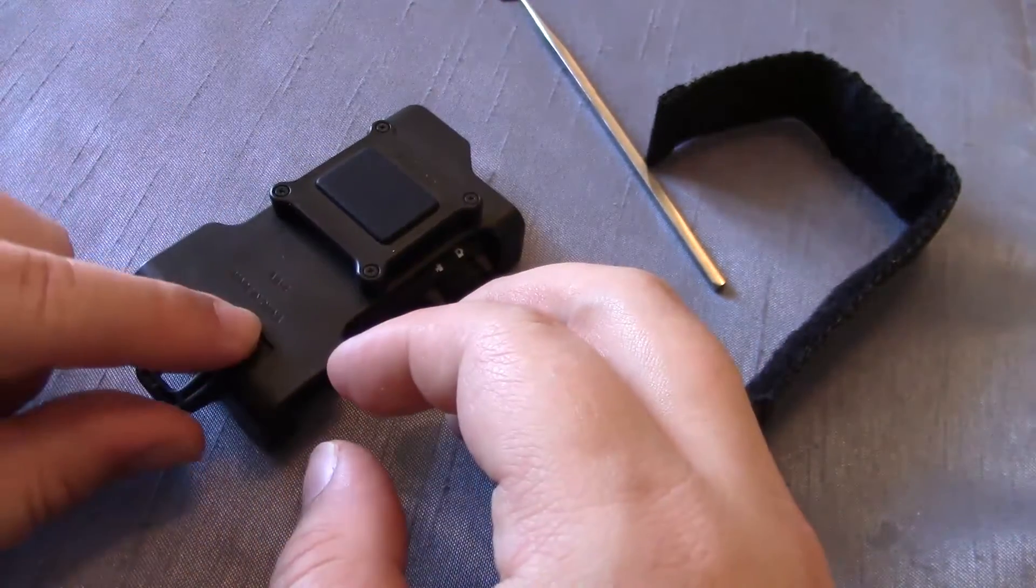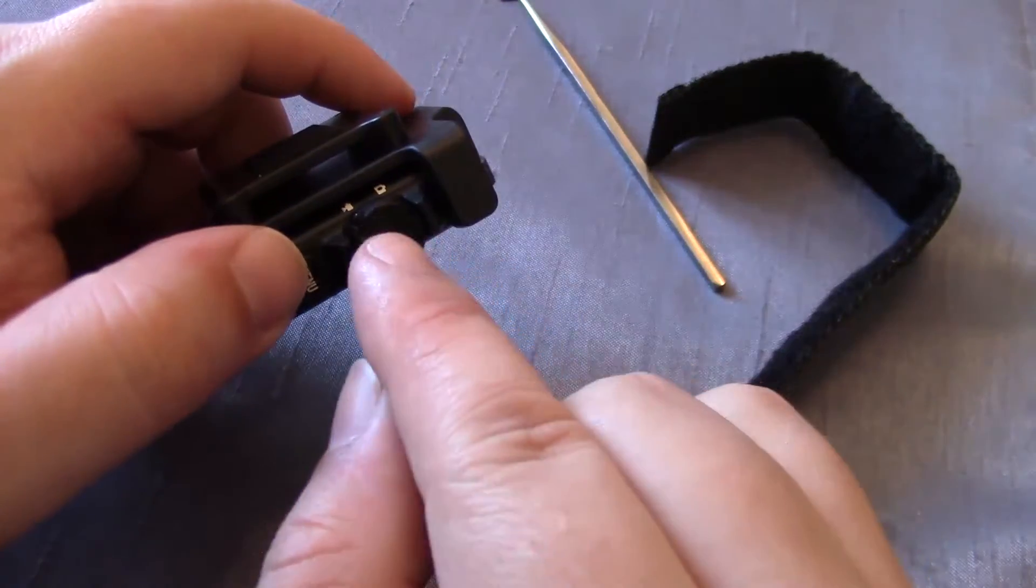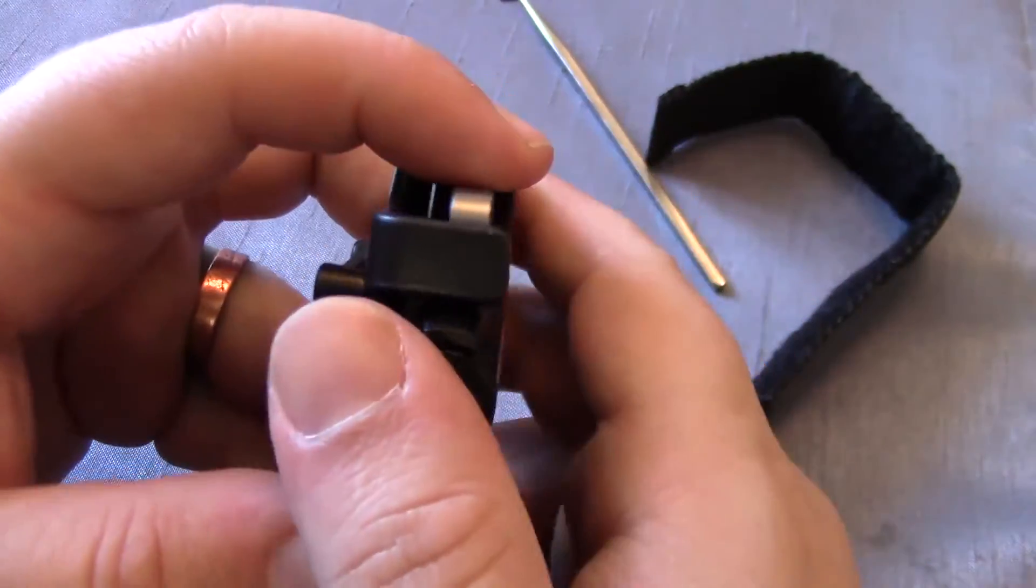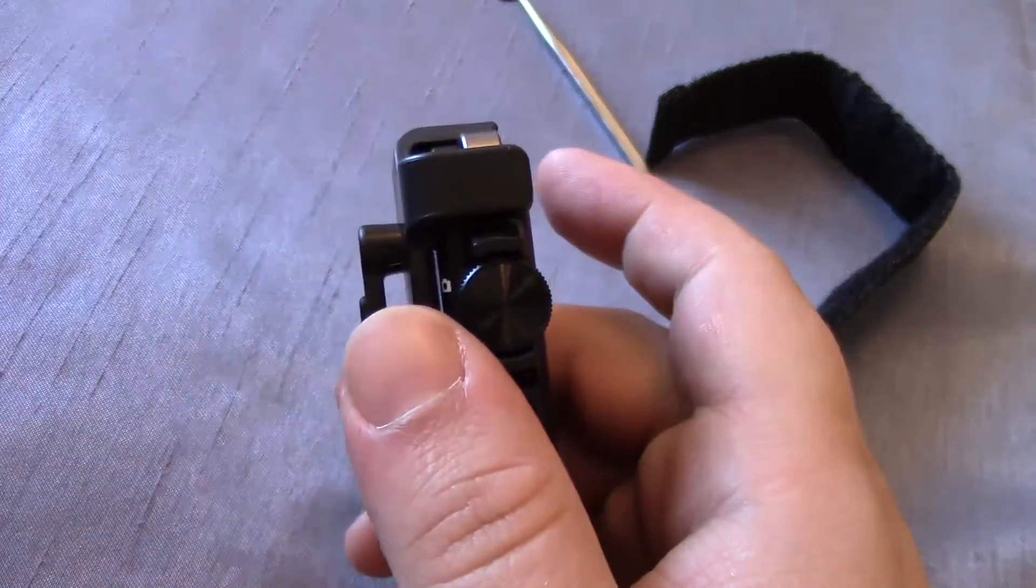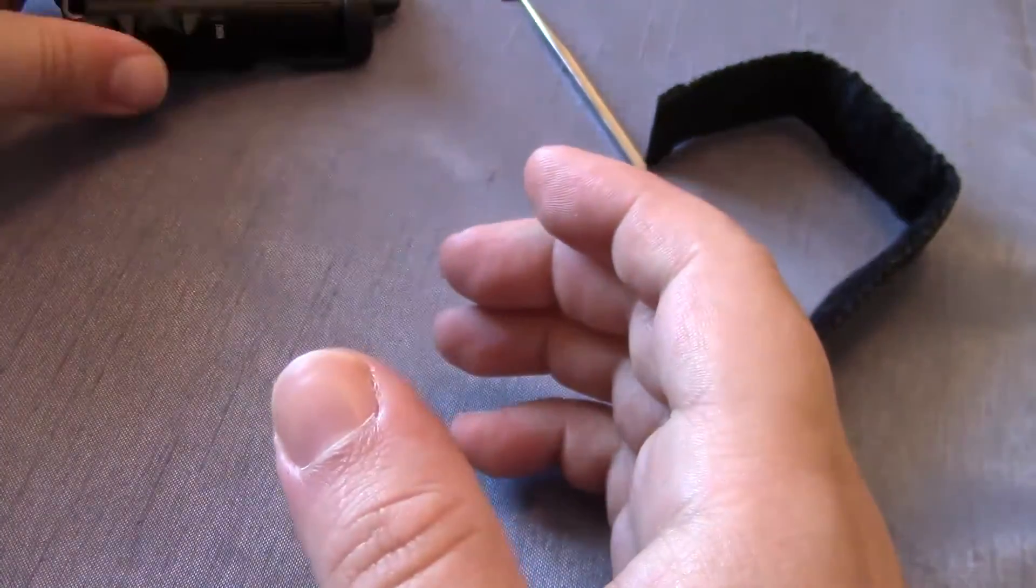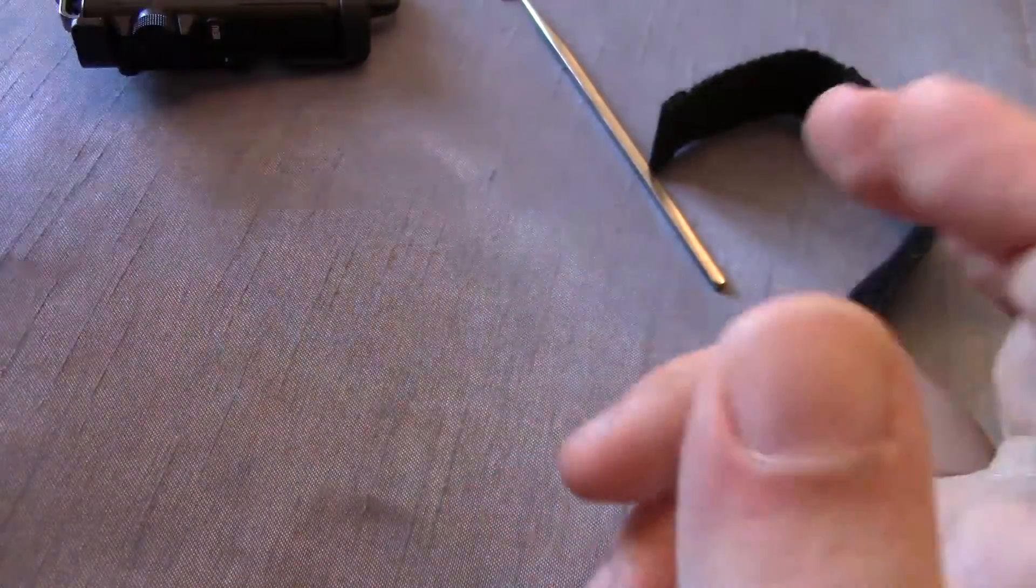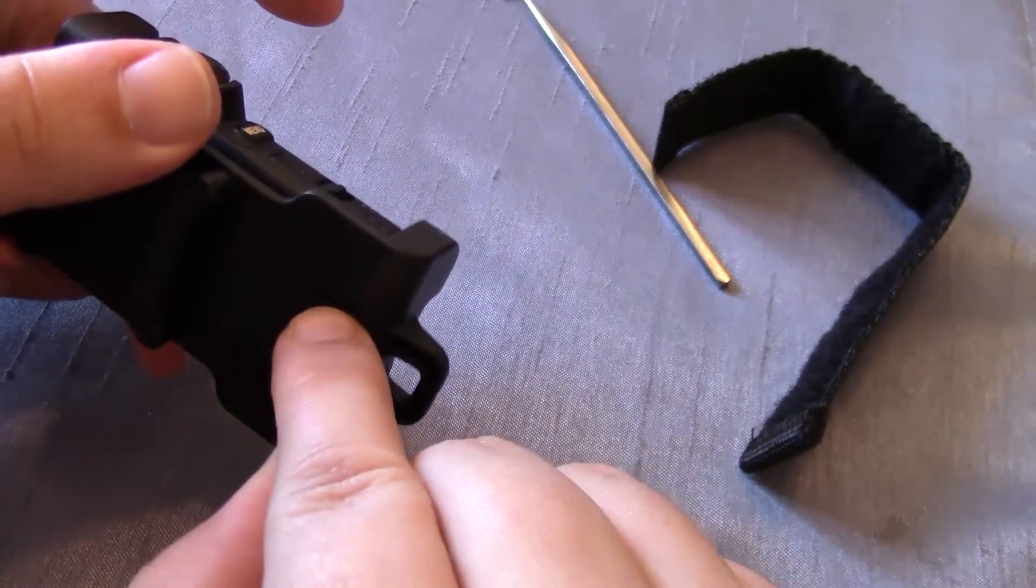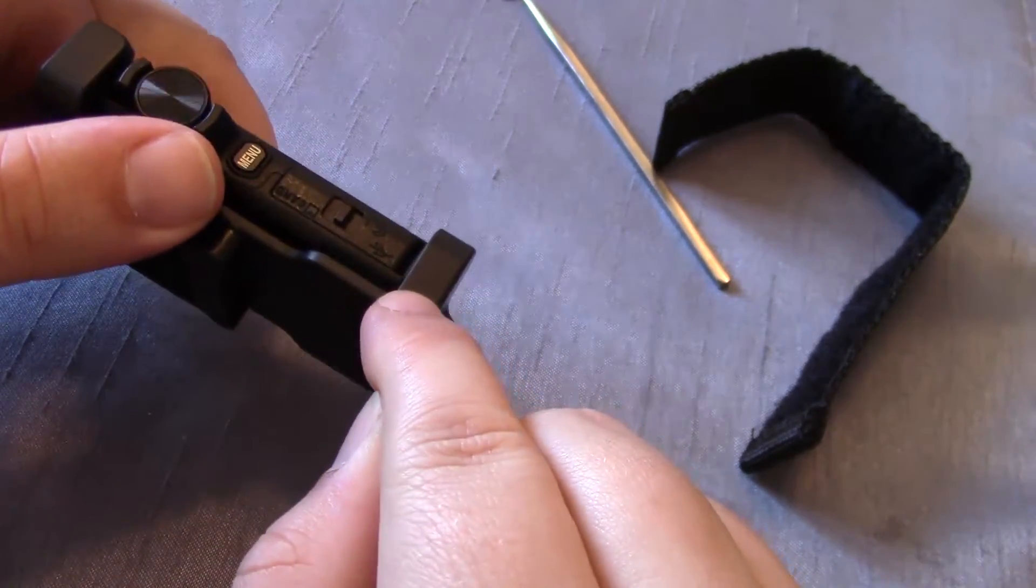But basically if you take that out now, the only issue that you'll now have is that when you put the camera in here, the modes for doing the time lapse and doing the different photos where it will take a photo every so many seconds or video and all that, those are no longer going to work because it needs that magnet in there to know that it's in this particular holder.